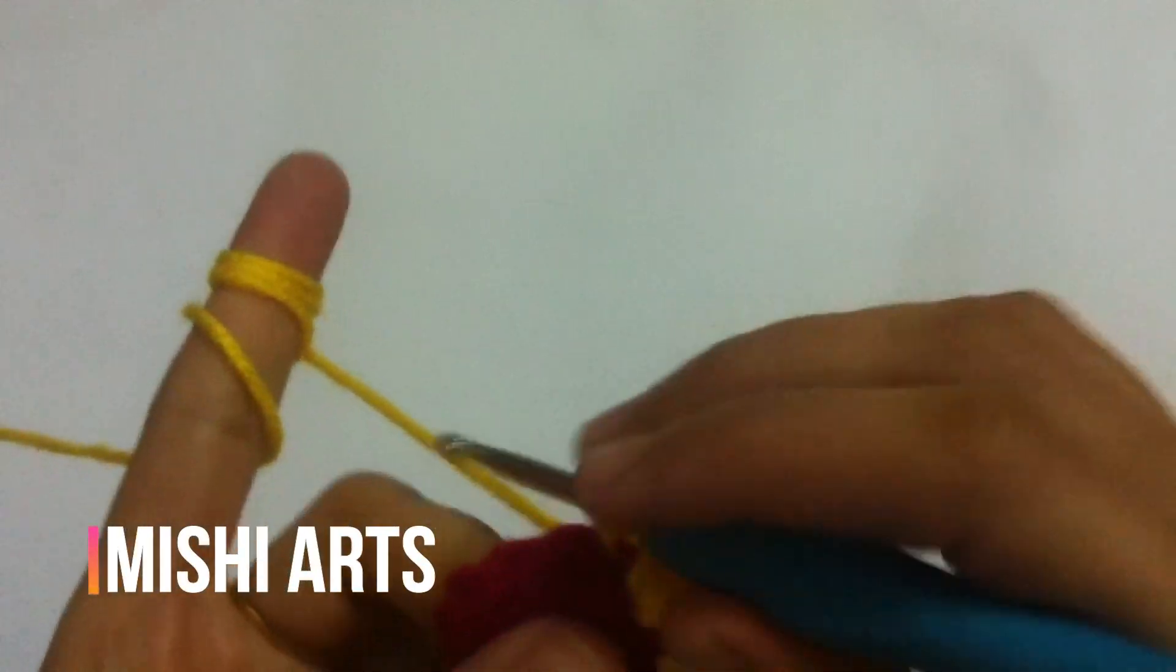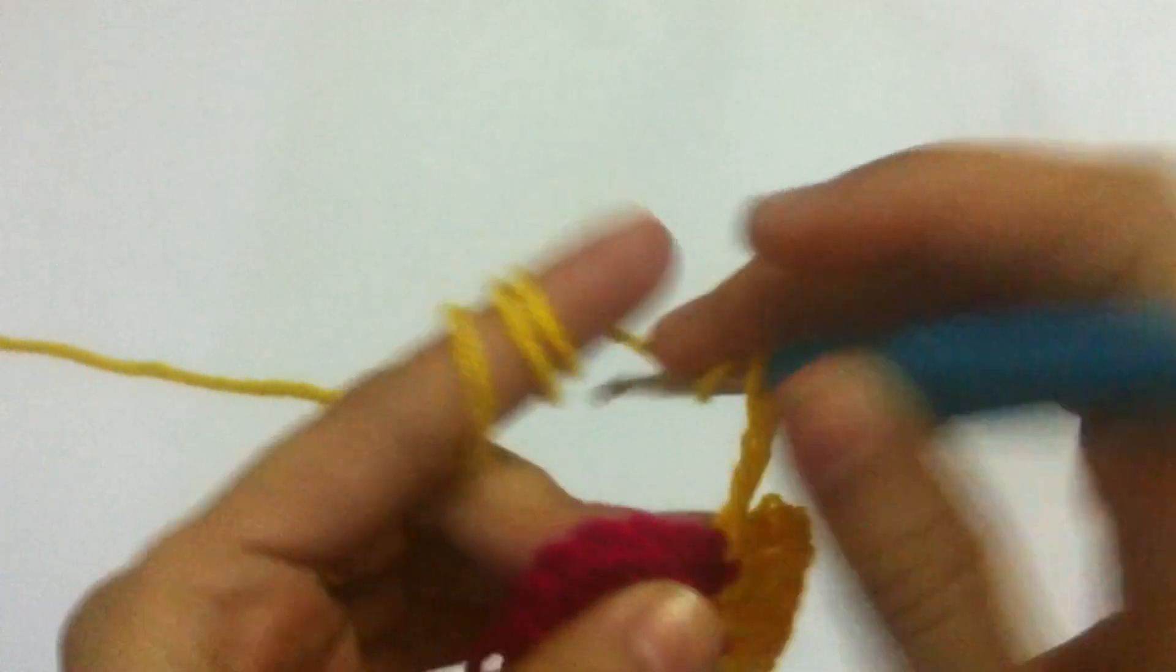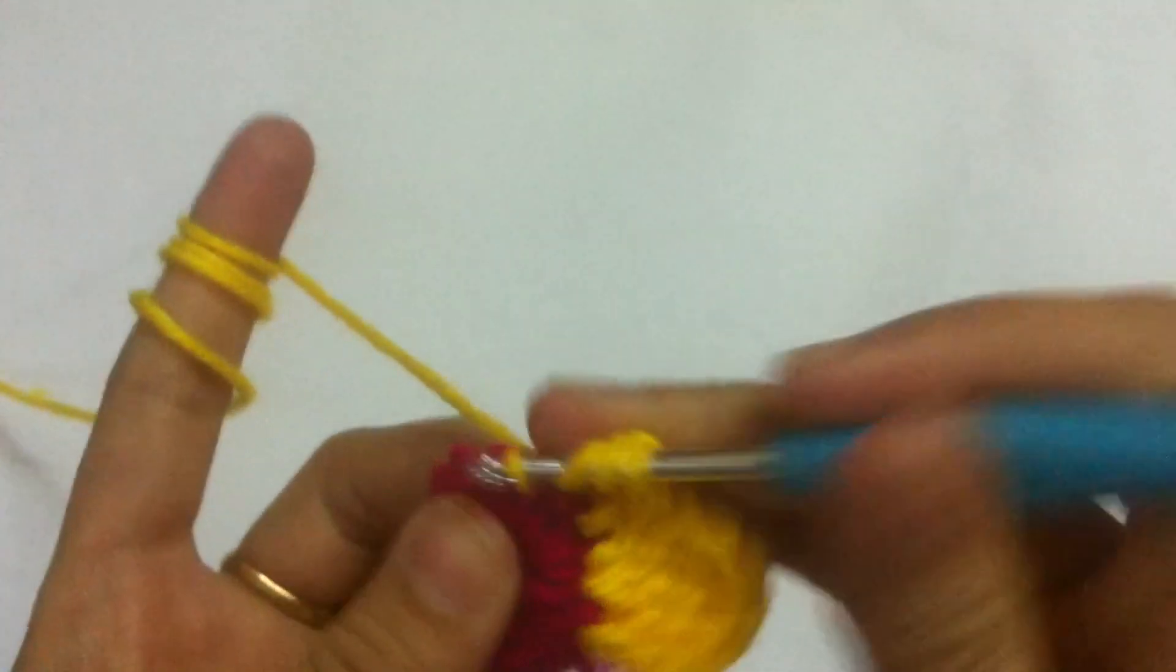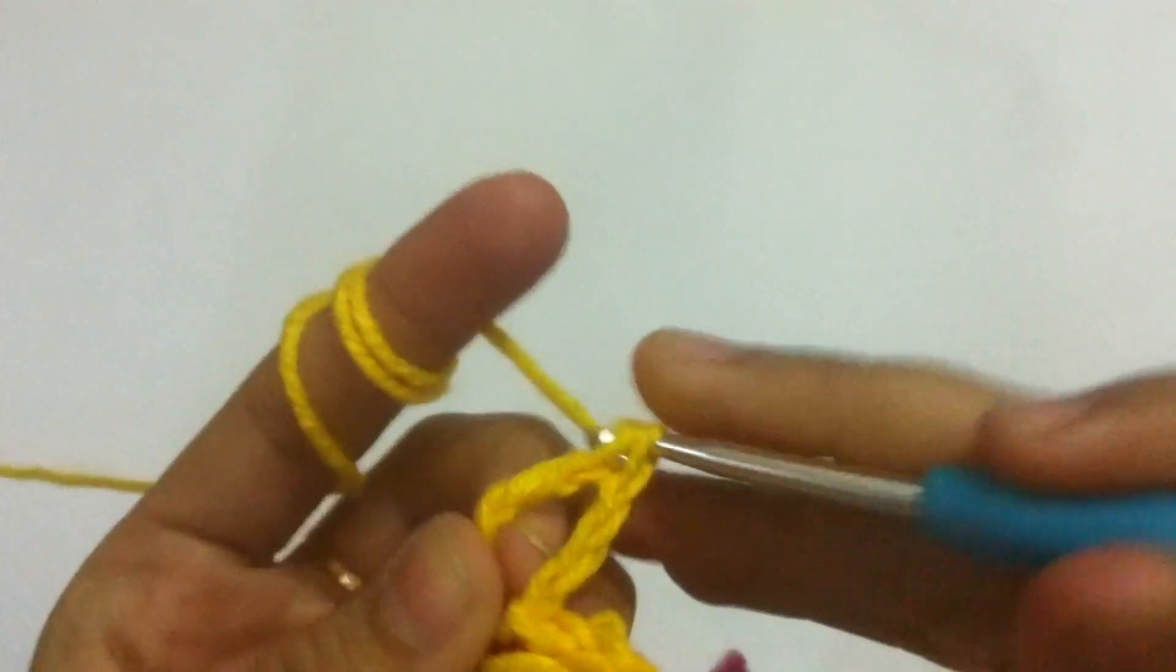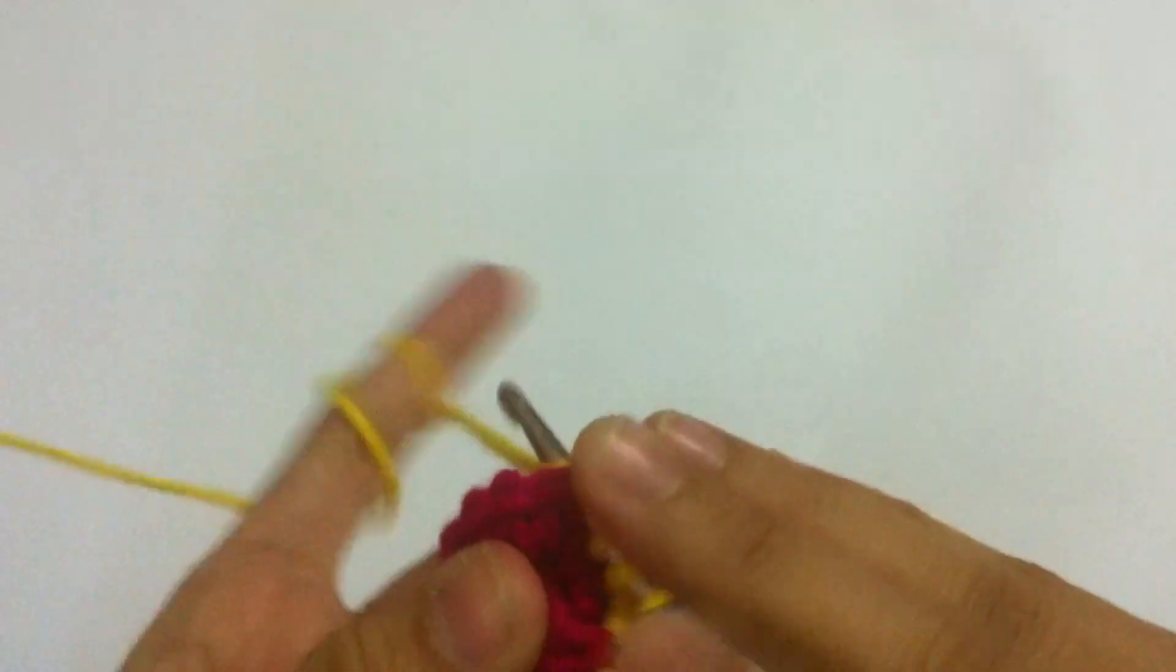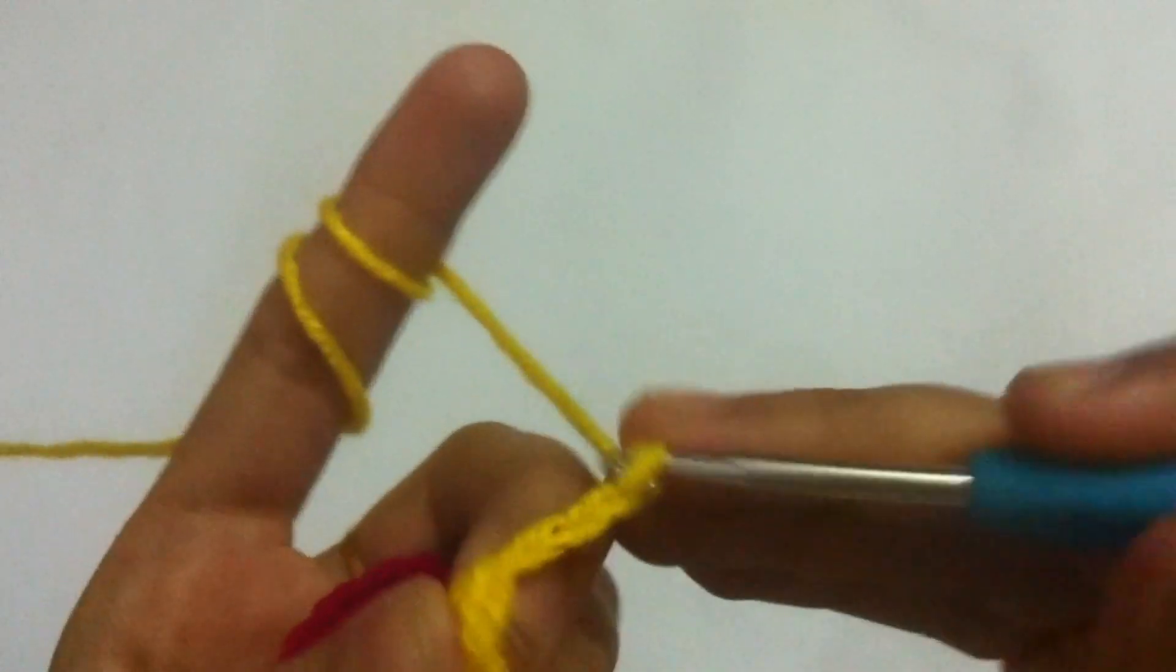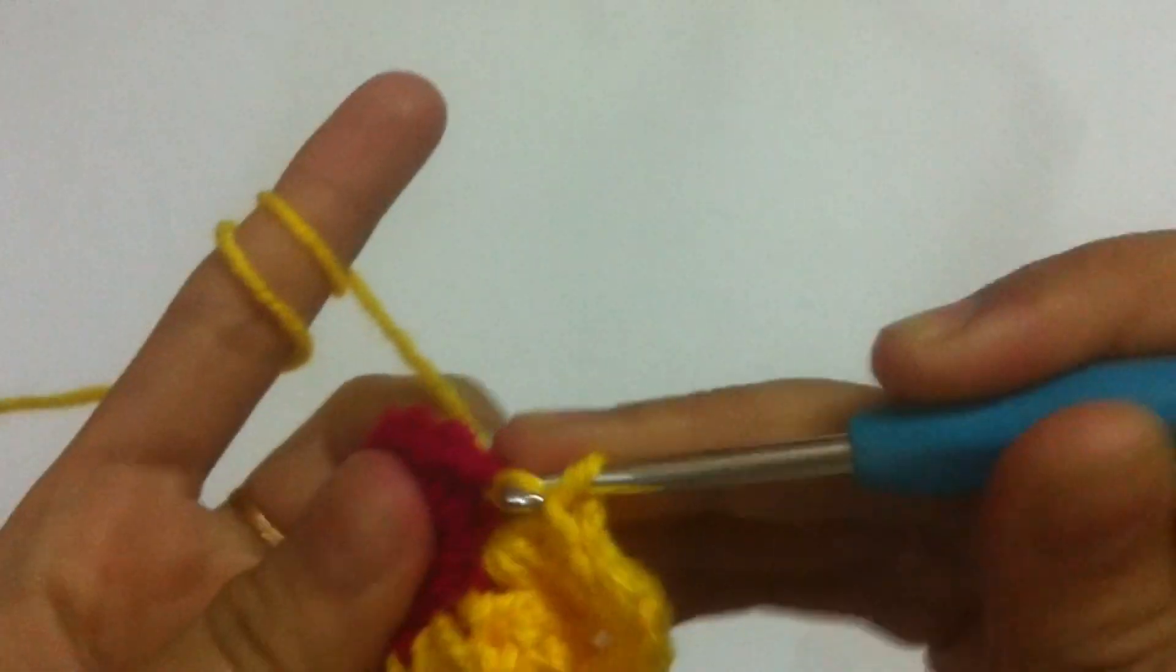Moving on, we are now going to make chain three. Yarn over two times, and into the next stitch we are going to make three treble crochets. You can also say it treble. After making three, you have to make chain three and slip stitch into the next stitch.